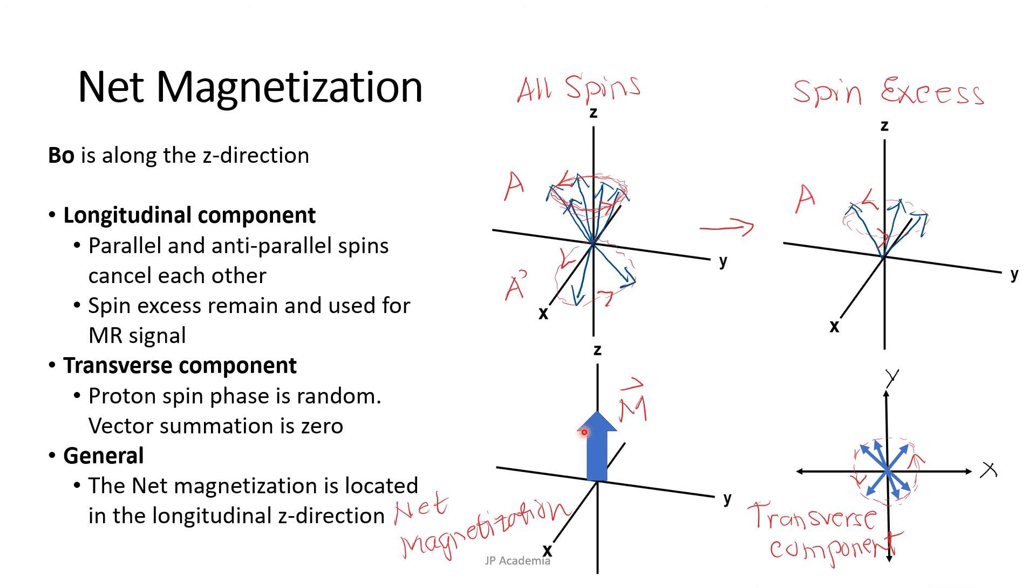However, because it is longitudinal or along the B naught, it cannot be measured directly. The transverse component here refers to the XY components and the vector sum here is zero.